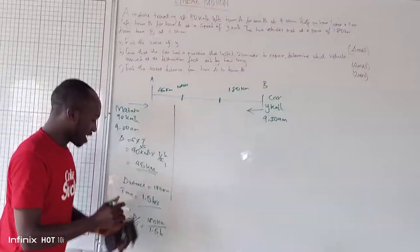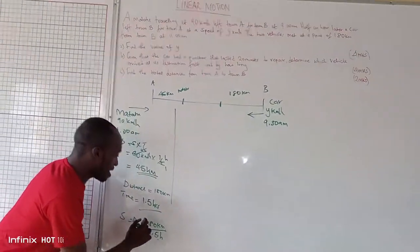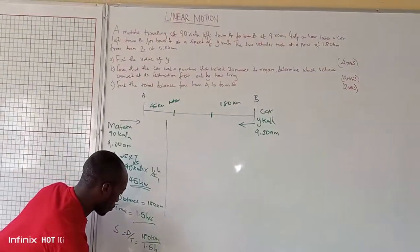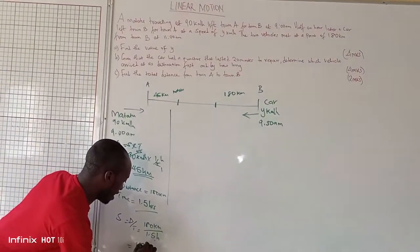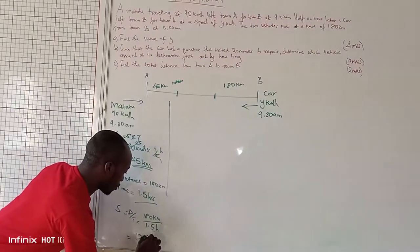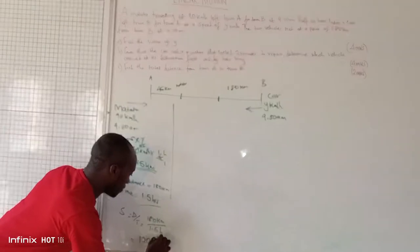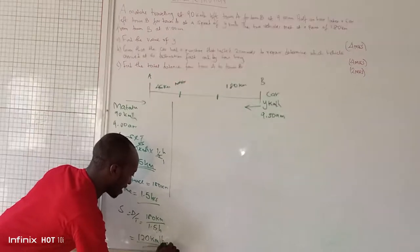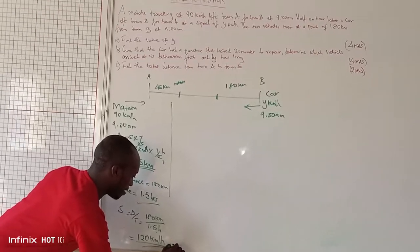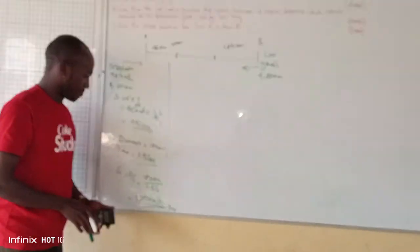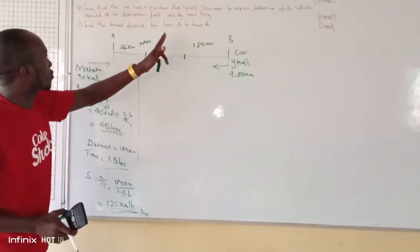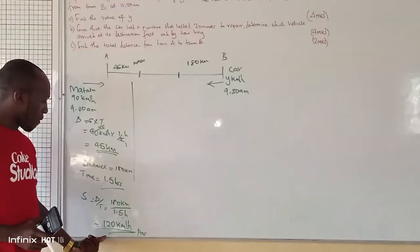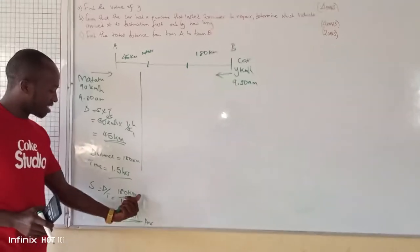The speed of the car is 120 km per hour. That is the value of Y — the answer to the first part of the question.